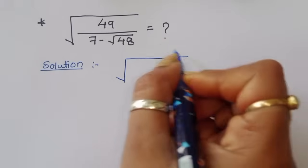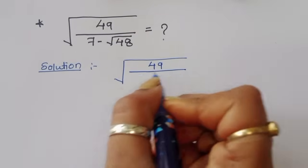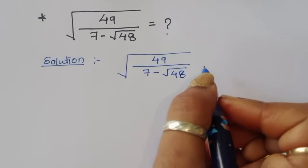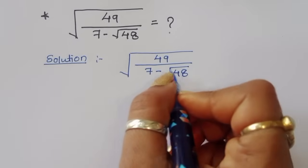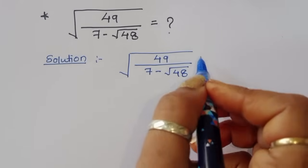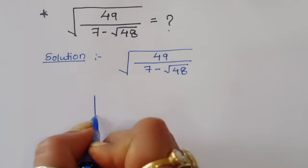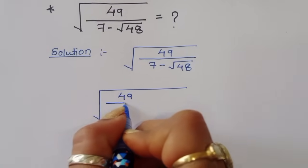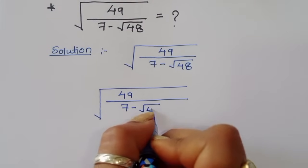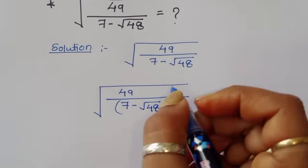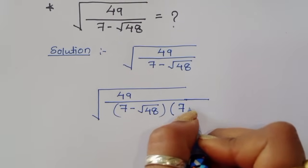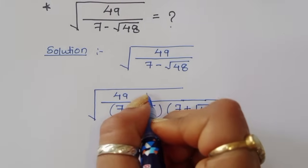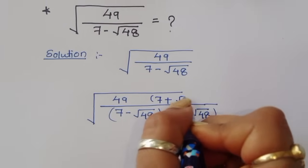We have square root of 49 divided by 7 minus square root of 48. We can do one thing here: multiply and divide the numerator and denominator by 7 plus square root of 48. So we multiply with that same number, 7 plus square root of 48.